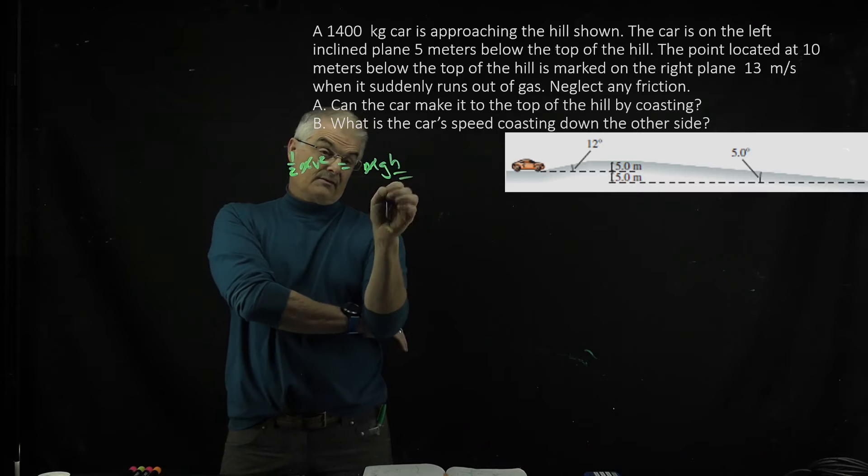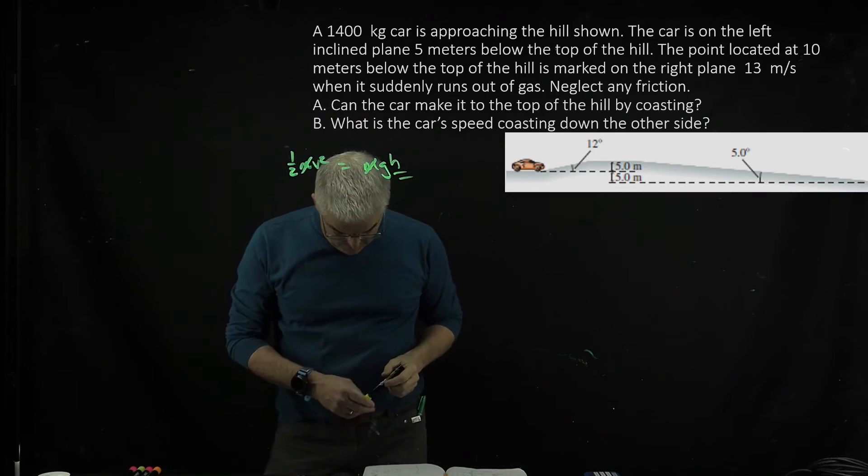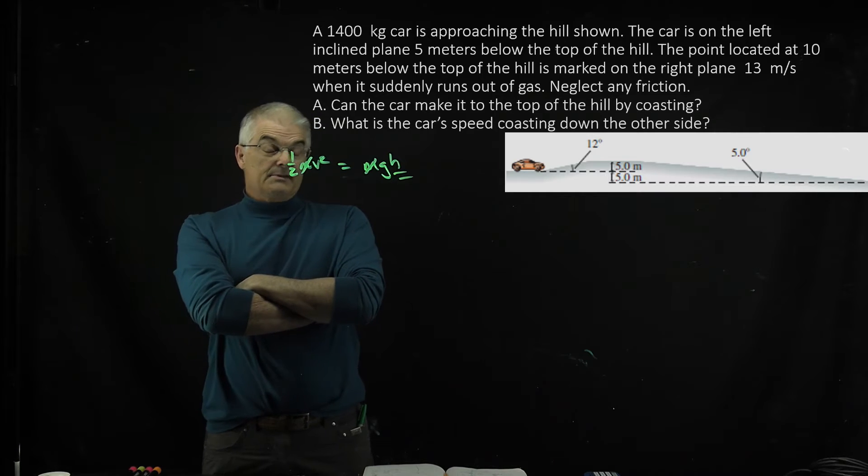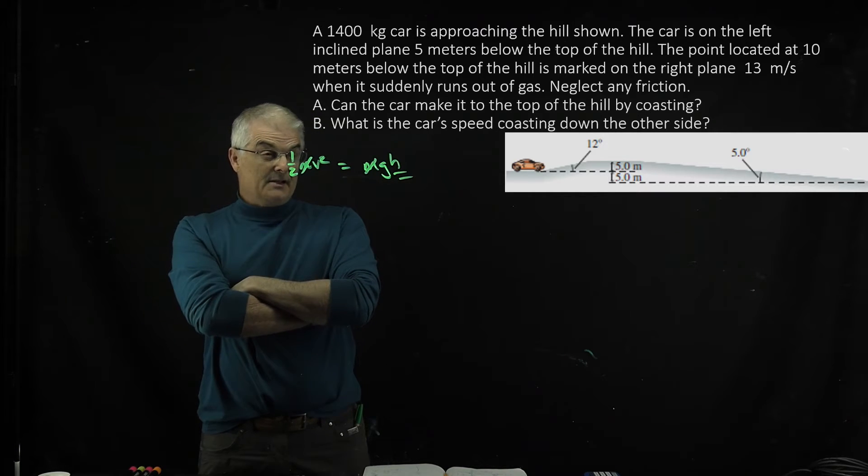You want to see if you get to five. When I did the math, I got eight meters, so he could climb to eight meters. Obviously five is less than eight, so therefore he makes it to the top. That's part A.